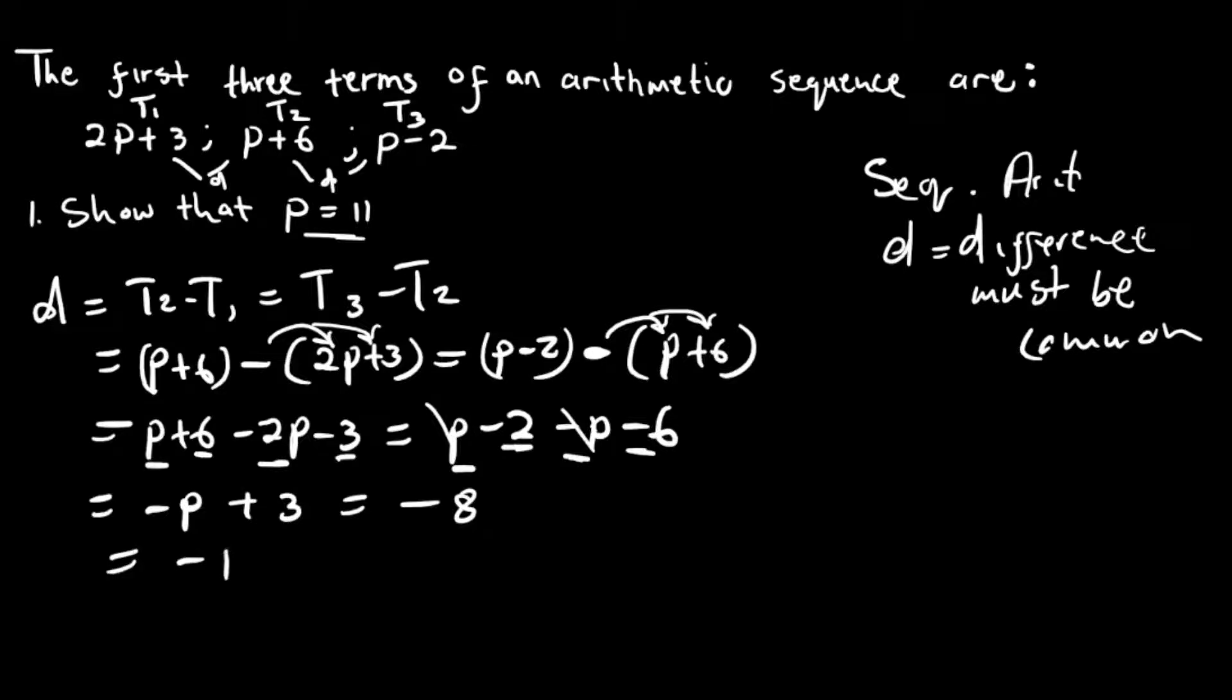Then we have minus p, we transpose it to that side, equals to minus 8 minus 3. So minus p is equal to minus 11, divided by negative 1. Therefore, p is equal to 11. That's the answer.